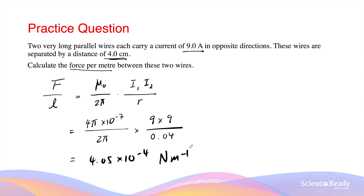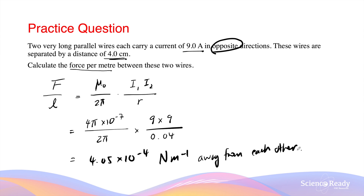Now remember, force is a vector quantity, so besides the magnitude we should also indicate the direction. The direction is given by the relative directions of the currents. We are told the currents are flowing in opposite directions, so the force will be repulsive — the force per metre for these two wires is directed away from each other. If the currents were flowing in the same direction, the force would be towards one another.